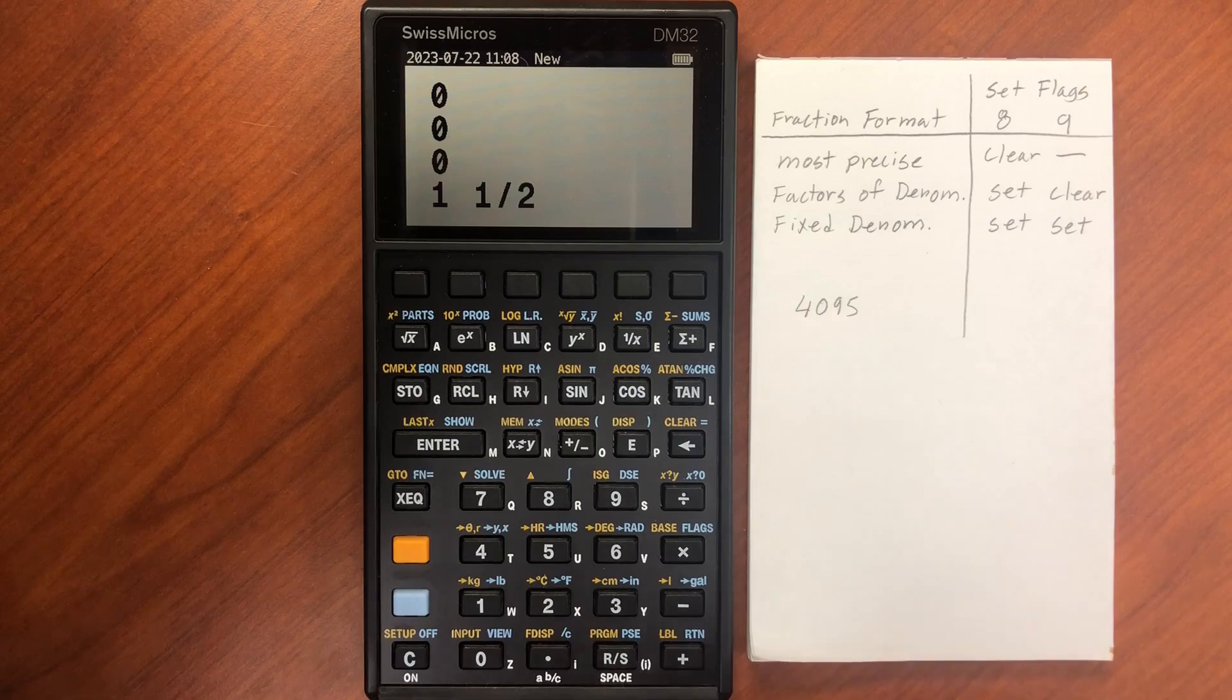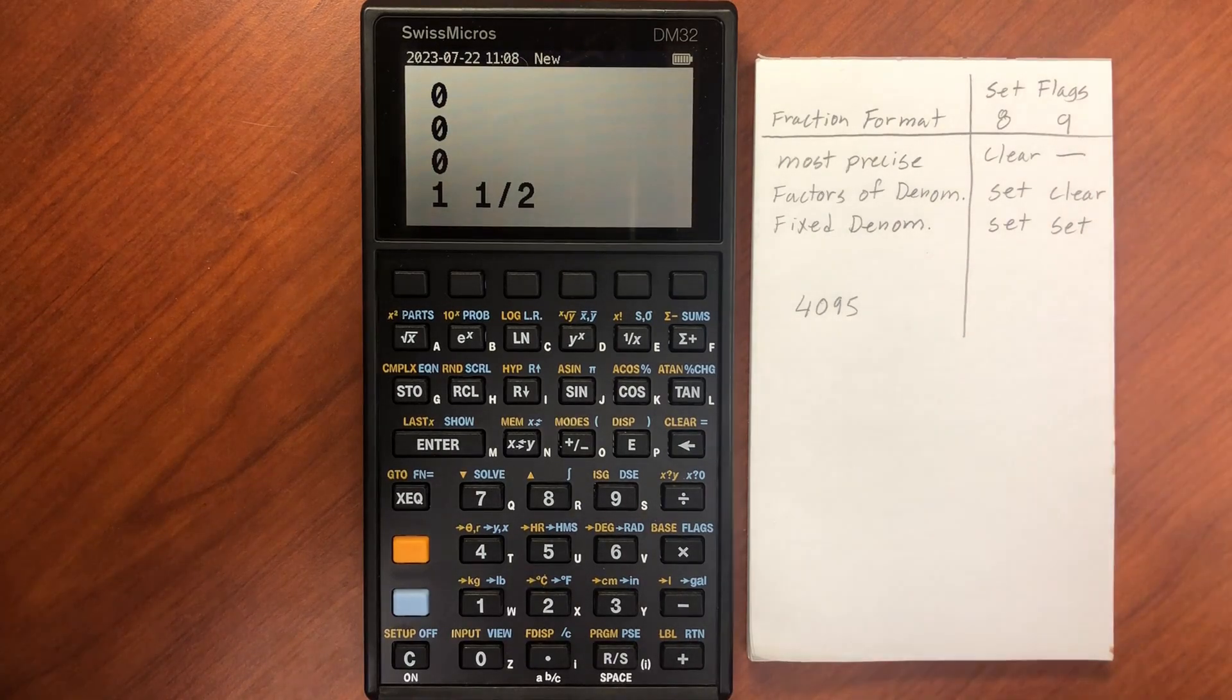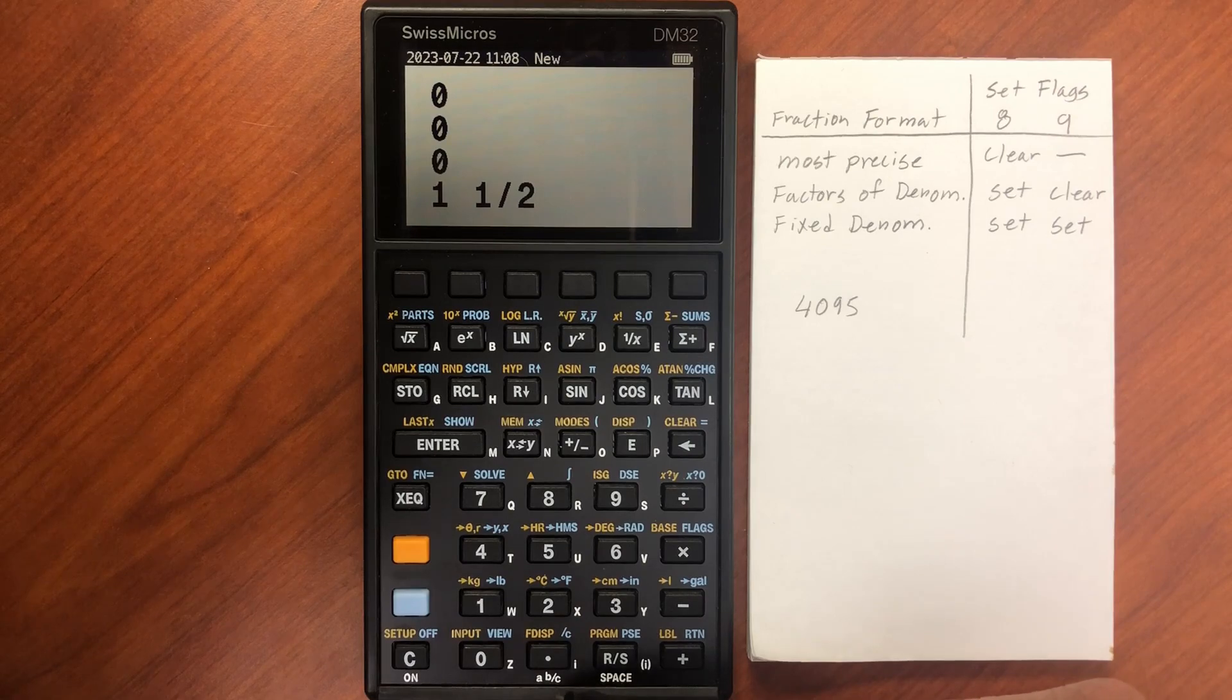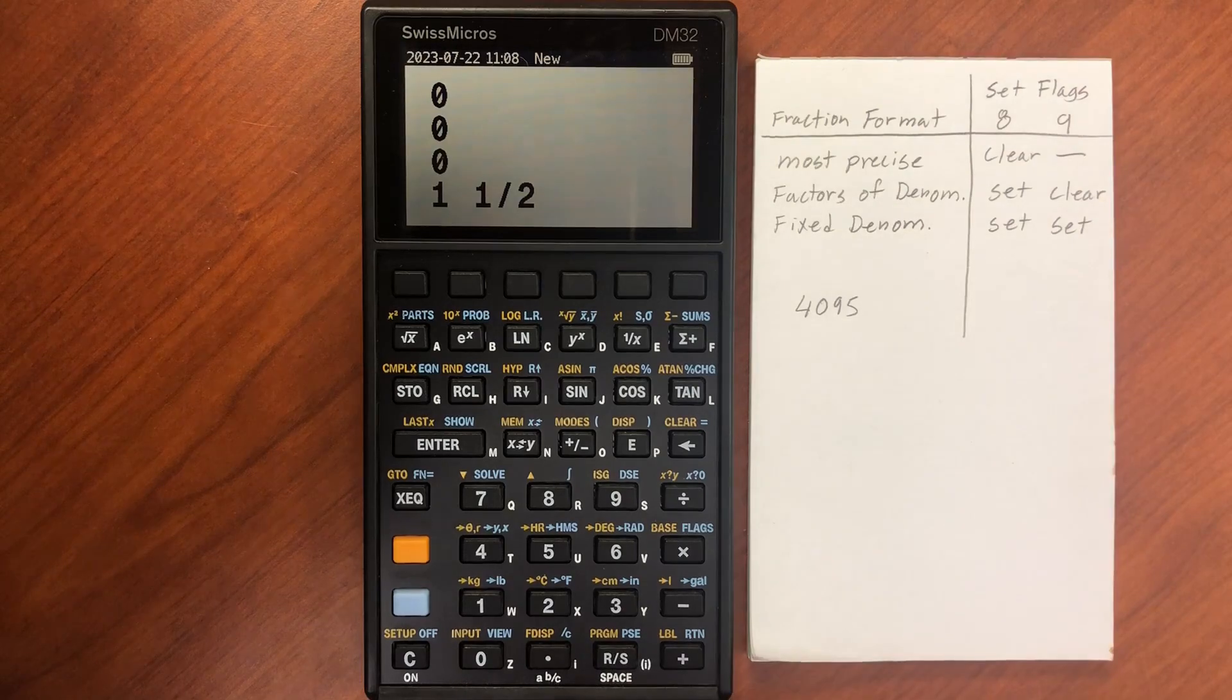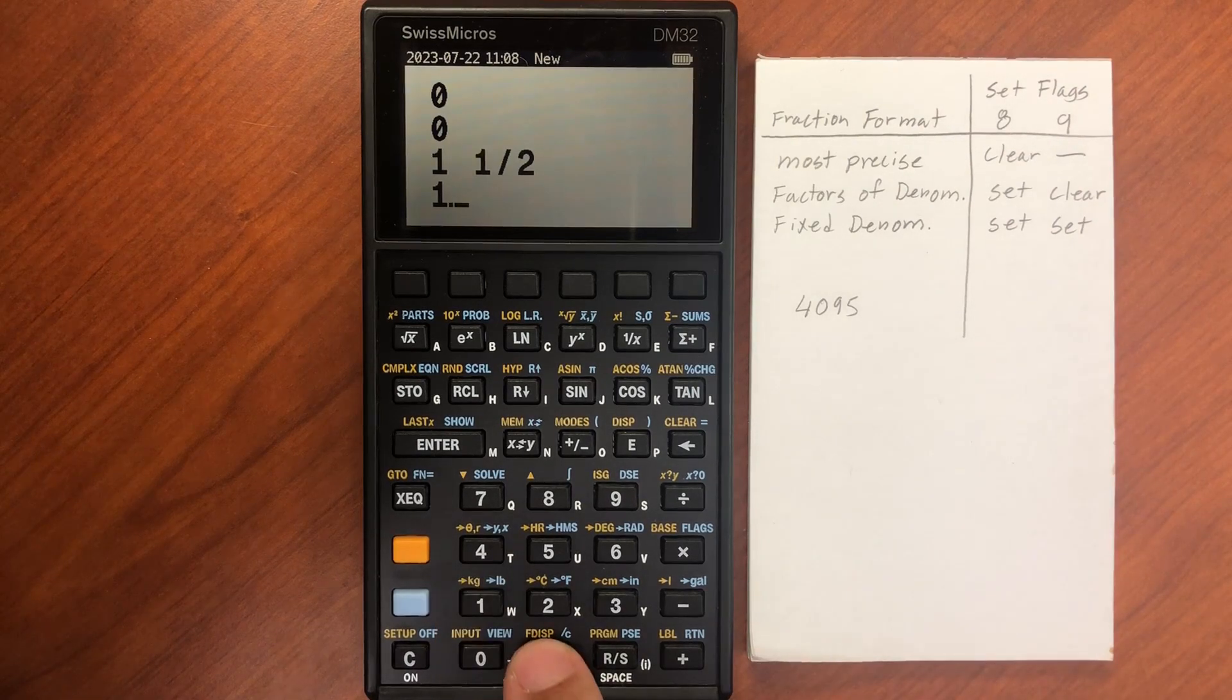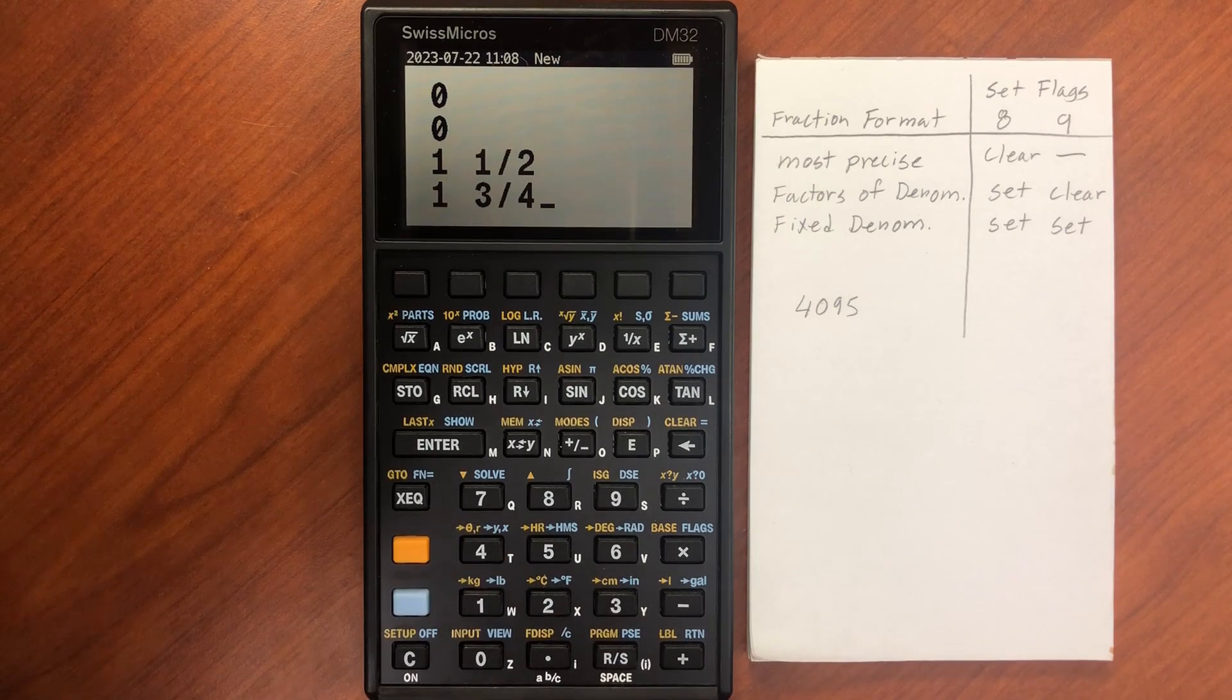Now let's say I want to add in 1.75. This little label down here, this ABC, reminds me that I can use the decimal point to enter in a fraction. So this one's going to have two decimal points—we do 1.3.4 for 1 and 3/4, and then we can add those two together.